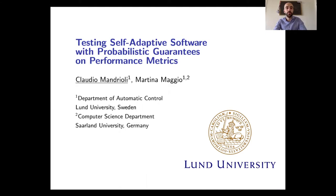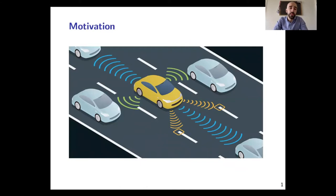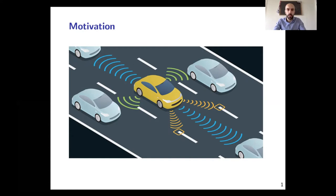First of all, why should we care about testing self-adaptive software? In general, autonomous systems are becoming more pervasive in our daily lives and they are getting involved in more safety-critical applications. For this reason, it is very important to verify that they satisfy and guarantee the performance requirements expected from them. But autonomous systems also live in highly uncertain environments, so it is very important to verify that they are able to perform in all the possible realizations of this uncertainty. This is not exactly an easy problem, and I will show why with an example.